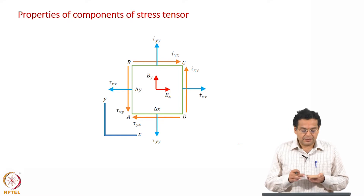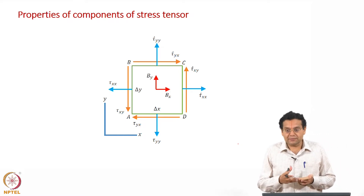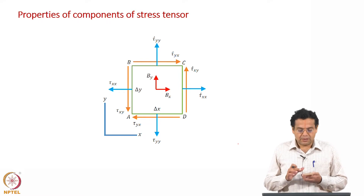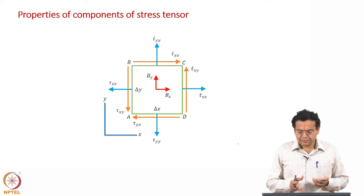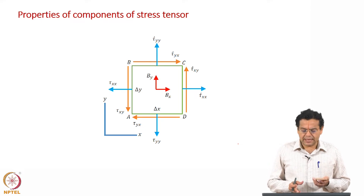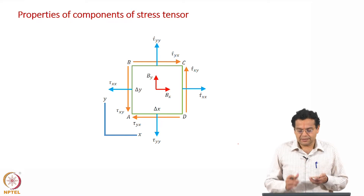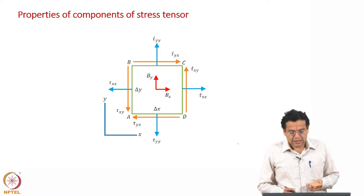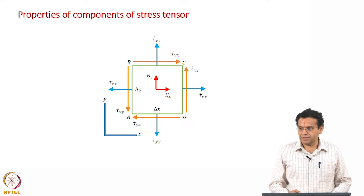It has a thickness, and we are going to prove this for the two-dimensional case and then extend it to the three-dimensional case. The plate has a thickness, and the dimensions are delta x and delta y with thickness h. What is shown are the stresses acting on the different surfaces — the normal and shear stresses — let us go through them one by one.